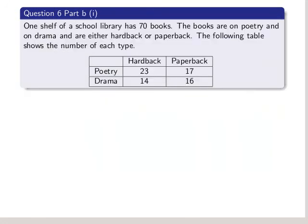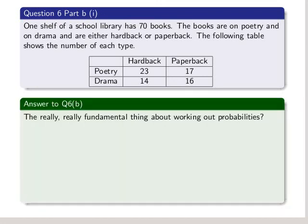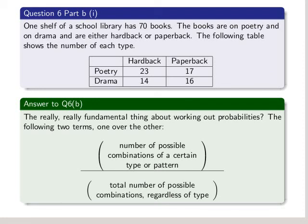Part B: One shelf of a school library has 70 books. The books are on poetry and on drama, and either hardback or paperback. The following table shows the number of each type. The really fundamental thing about working out probabilities: we have two terms, one over the other. On the numerator, we get the number of possible combinations of a certain type of pattern, which we're usually described what it is. And that's all over the total number of possible combinations, regardless of the type. So that's the fundamental way to calculate probability.